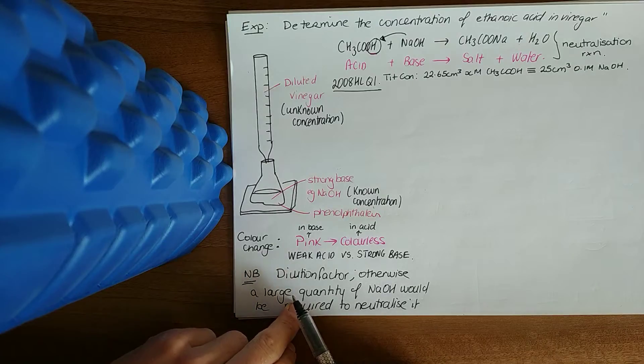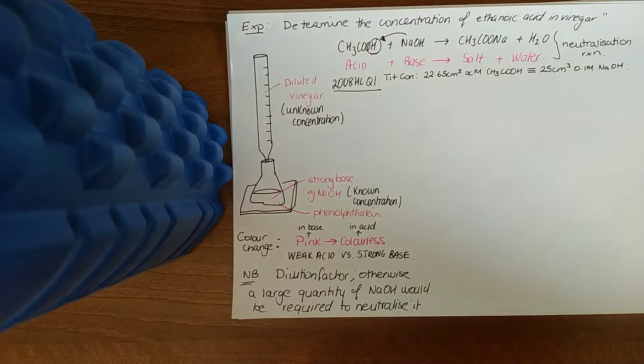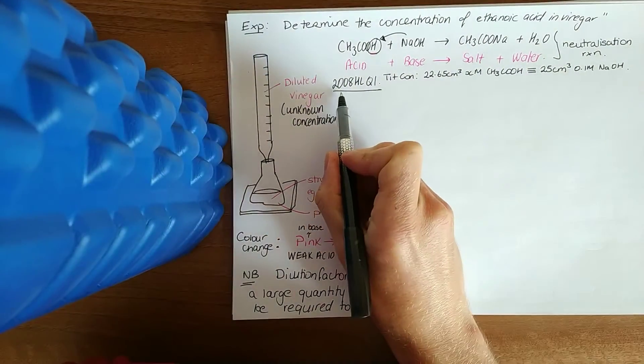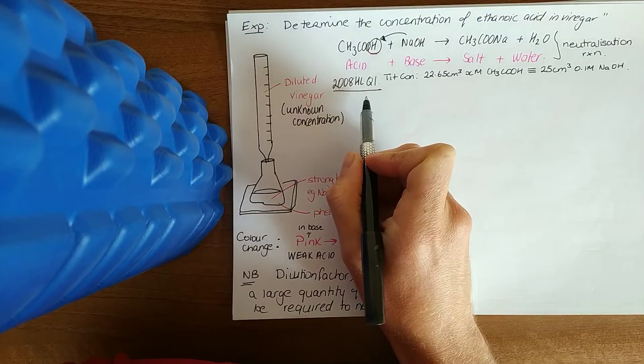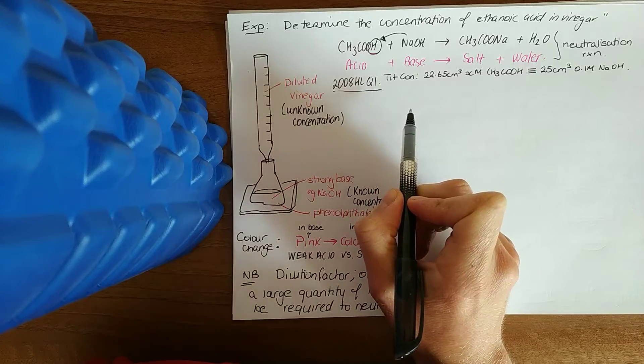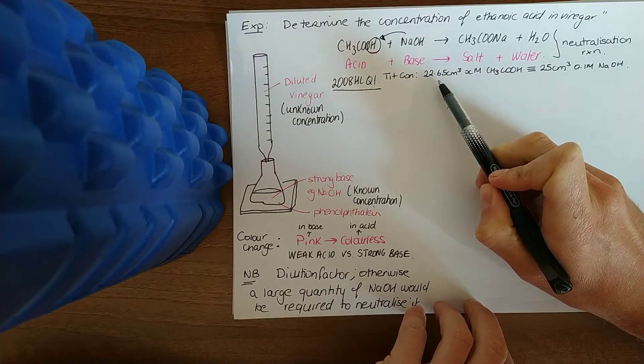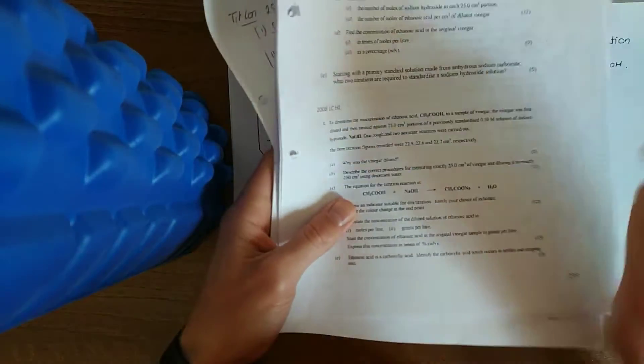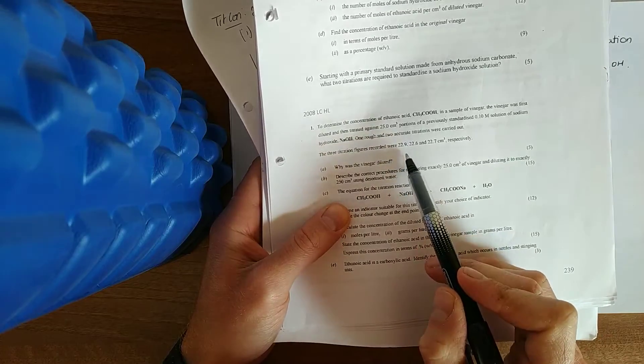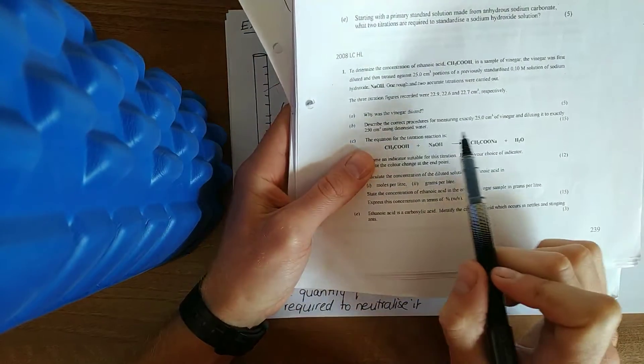The thing you've got to be careful of is the dilution factor. Let me have a look at this question we're going to do. I'm going to do the 2008 higher level question one, which leaves you with the 2016 question one in first principles. I've already skimmed down the titration conclusion. They provided you with 22.9, 22.6, and 22.7 centimeters cubed of vinegar. Remember when you're doing your titration it's one rough, two accurate. Ignore the 22.9, find the mean of the two accurate by adding them up and dividing by two to get 22.65.